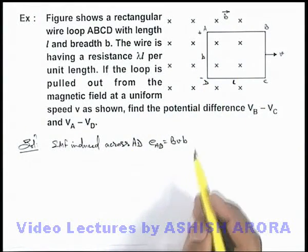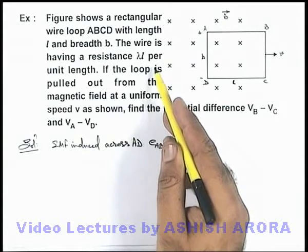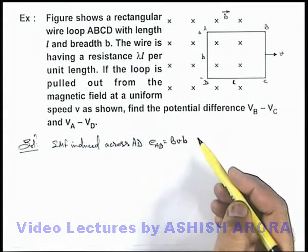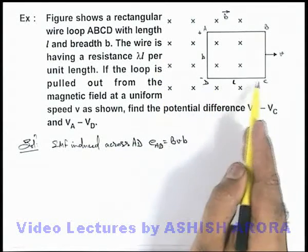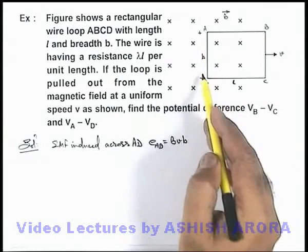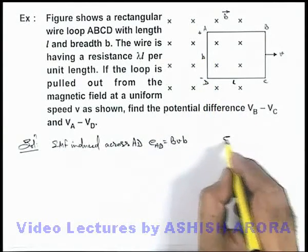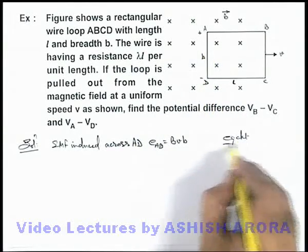As the wire has resistance λ per unit length, the resistance of length l will be λl, and that of b is λb. So we can draw the equivalent circuit of the loop.